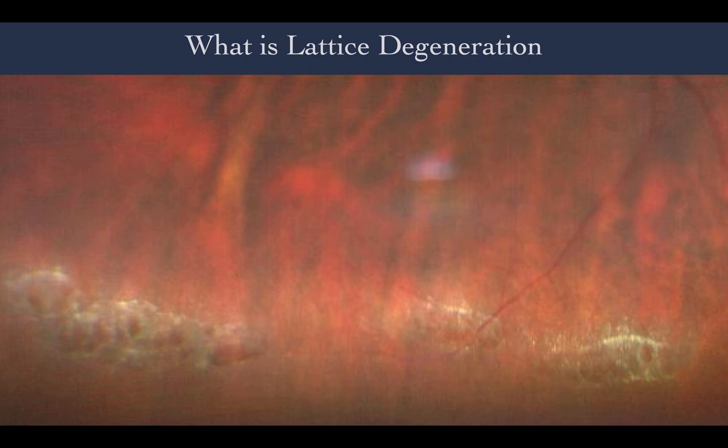It is more common in myopic people, who may be affected in up to 30%. Other associations of lattice degeneration are retinal detachment and hereditary vitreopathies like Stickler syndrome. The condition is asymptomatic as long as no other secondary changes like posterior vitreous detachment or retinal tears occur.